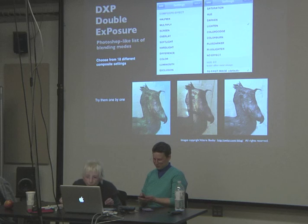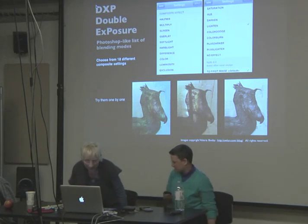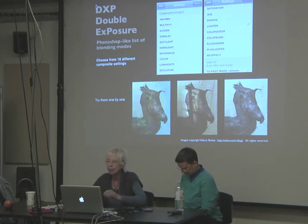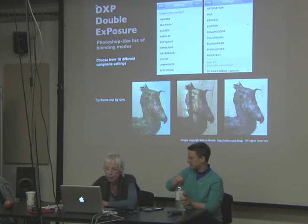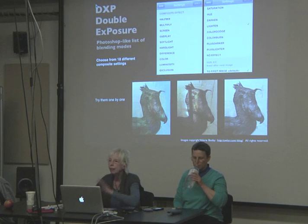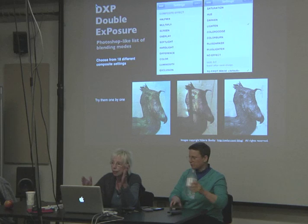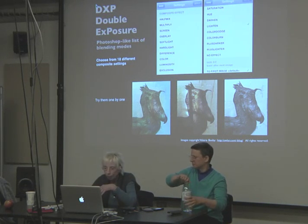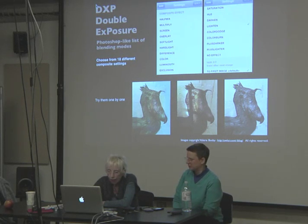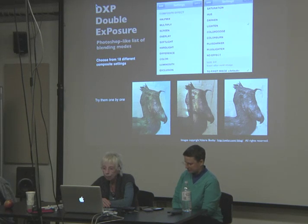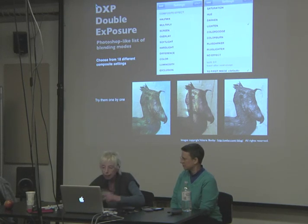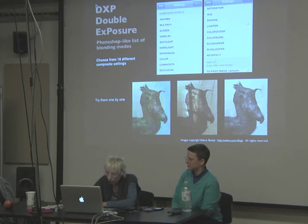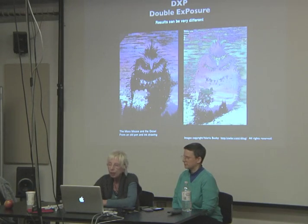Most of the apps reviewed so far were concerned with making a mark like a pencil. Now I'm starting with Double DXP — double exposure — the big thing about it being that it gives you a list of blending modes almost as good as the range in Photoshop. You've got 18 different composite settings with technical explanations for each, and it's a very absorbing pastime to take a picture and try all the blending modes one by one.